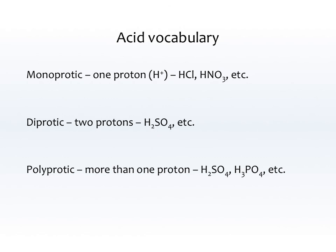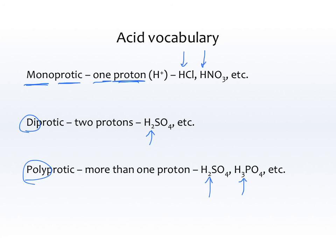Some acid vocabulary: monoprotic means one proton — a proton is just a hydrogen ion — so HCl with one H, or HNO3 with one H. Diprotic means two protons, so H2SO4. Polyprotic means more than one proton — it could be two or three — so H2SO4 or H3PO4, anything with more than one proton. We'll get into that more later.